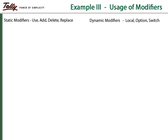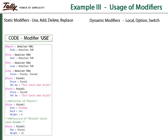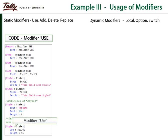Let us see a program which makes use of the modifier 'use'. In this program, there are two fields which have been assigned two different styles for displaying the data by using the style attribute. Two style definitions have been created. The second style definition reuses the first style definition and modifies the value for the height attribute; the other attributes are inherited as present in the first definition.